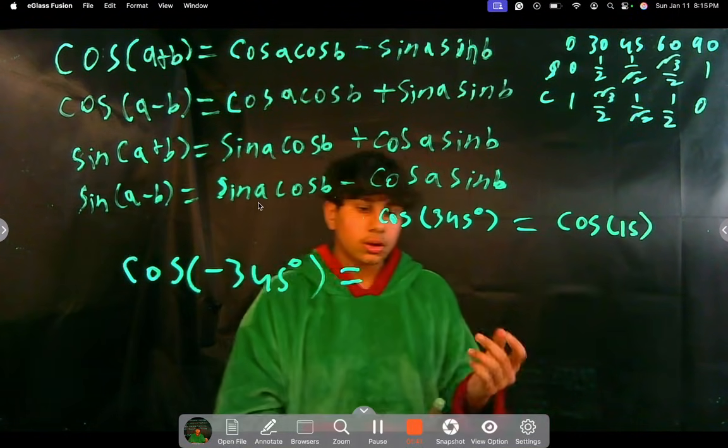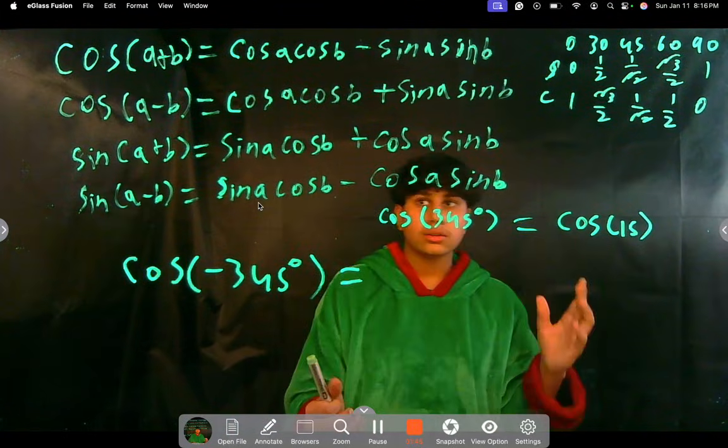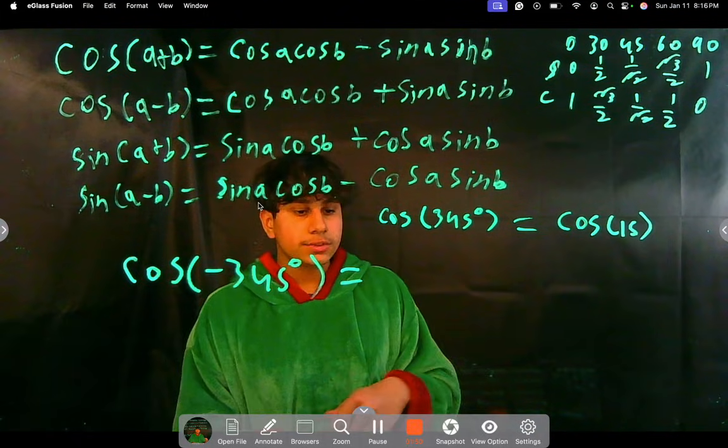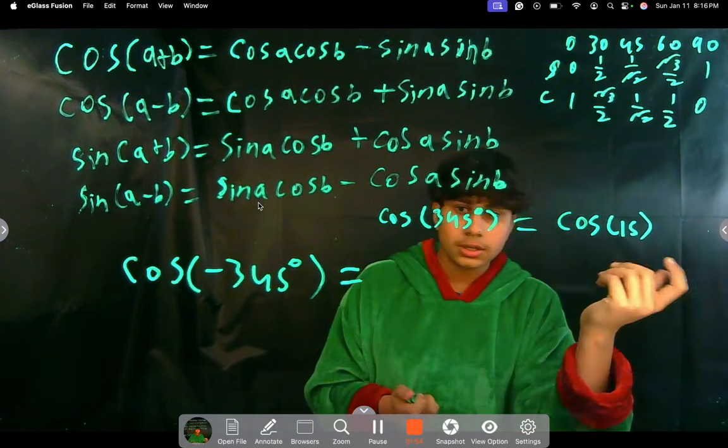And if you watched our last video, we kind of split the angle into two different angles, and then we use our identity. But here, 15 doesn't really split into anything that we know, because our smallest angle is 30 degrees.